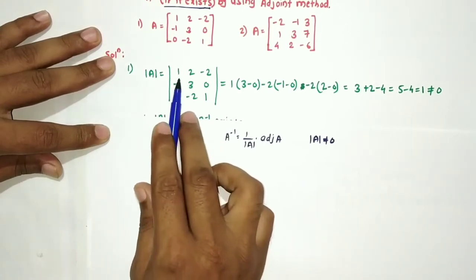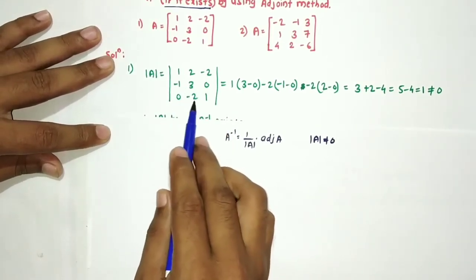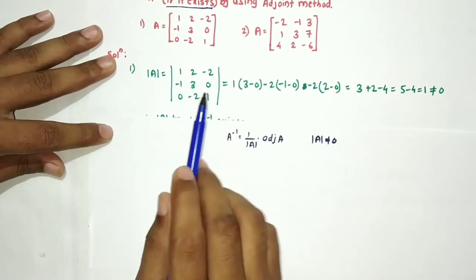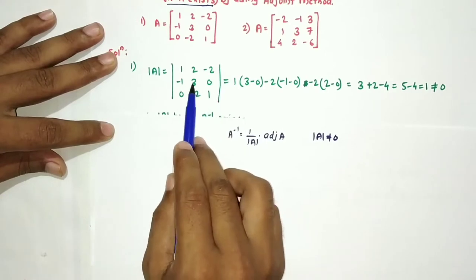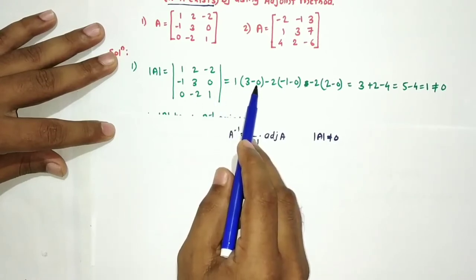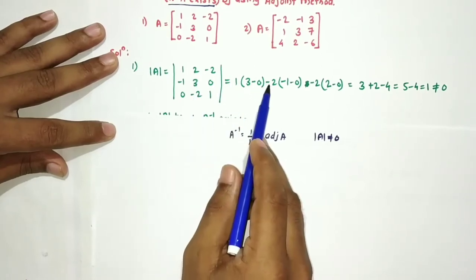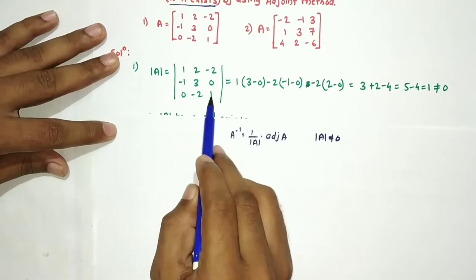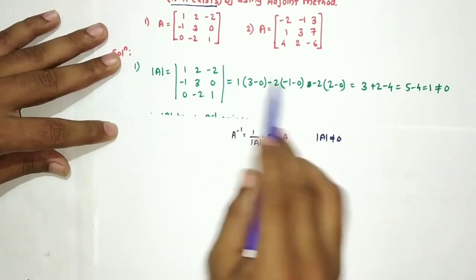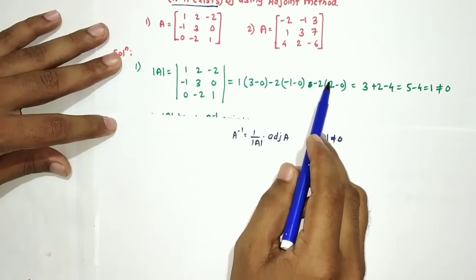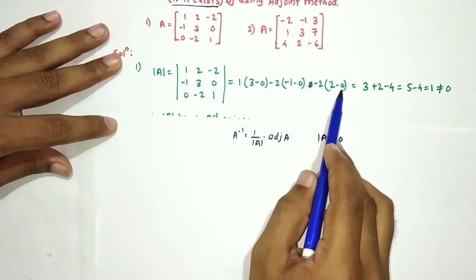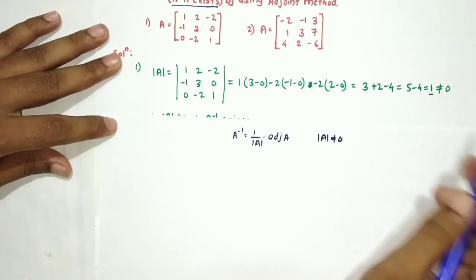Determinant of A equals the determinant of [1, 2, -2; -1, 3, 0; 0, -2, 1]. Expanding along the first row: take 1, delete its row and column, remaining gives 3×1 minus 0×(−2) = 3. Then minus sign, take 2, delete its row and column: (−1)×1 minus 0×0 = −1. Then plus sign, take −2, delete its row and column: (−1)×(−2) minus 3×0 = 2. So determinant equals 1, which is non-zero.